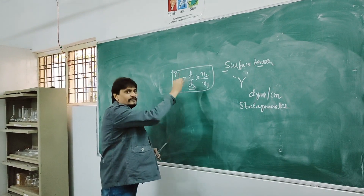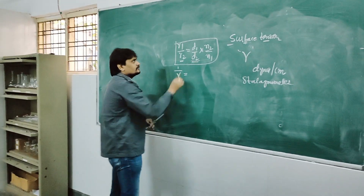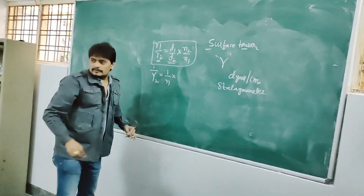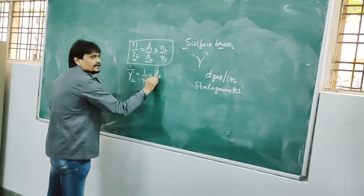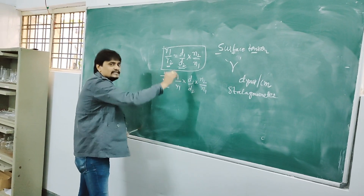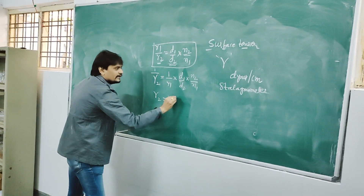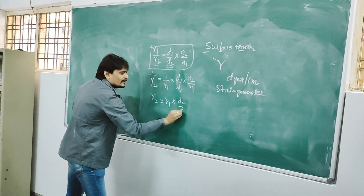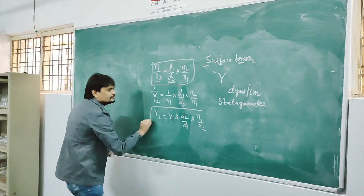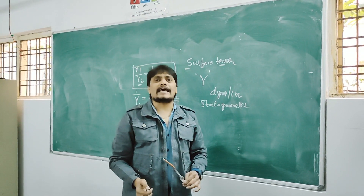By rearranging the equation, you get γ2. Since γ1 by γ2 equals D1 by D2 into N2 by N1, converting to the actual form gives: γ2 equals γ1 into D2 by D1 into N1 by N2.